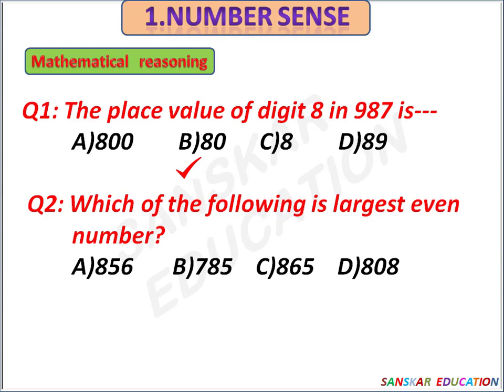Which of the following is the largest even number? Options are 856, 785, 865, 808. The largest even number is 856. Option A is the correct answer.